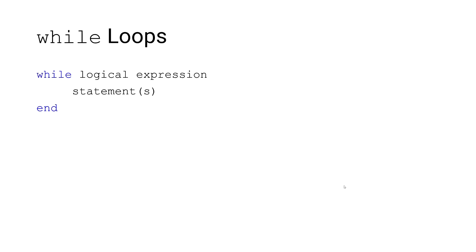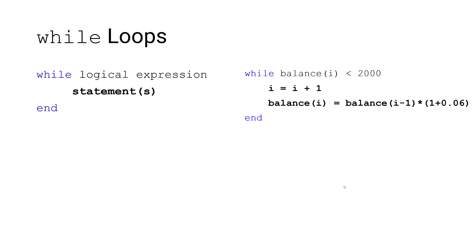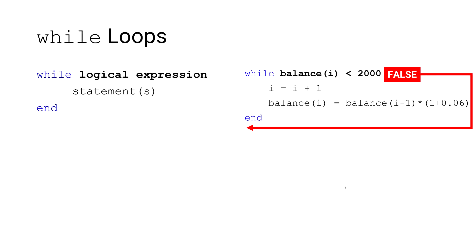Let's take a look at the typical structure of a while loop and a partial solution of our problem. First, we look at the logical expression — in this case, that our balance is less than $2,000. So long as this logical expression is true, our program will evaluate these statements. Our variable i is serving as an index, and our balance statement states that the current balance is assigned the value of the previous year's balance plus interest.